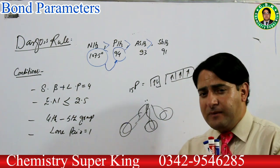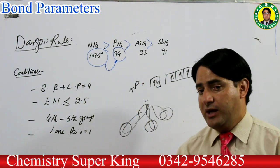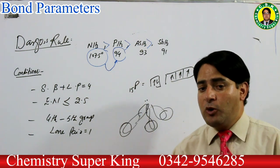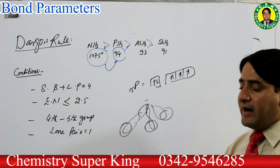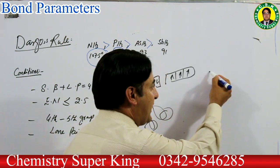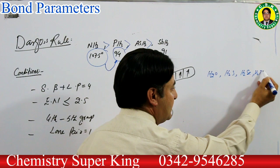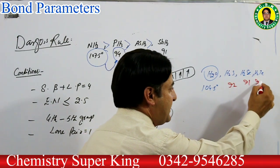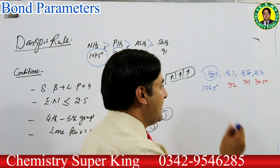Hybridization نہ ہونے کا thermodynamic parameters سے بھی support ملتا ہے — ان bonds کی strength hybrid orbitals سے بنے bonds کے مقابلے میں بہت کم ہے۔ یہی وجہ ہے کہ ان bond angles میں بہت زیادہ difference ہوتا ہے۔ Same case group 6 کے hydrides میں ہے — H2S، H2Se، H2Te میں بھی۔